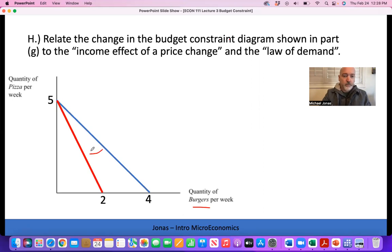This pivot to our new budget constraint means that all the combinations of pizza and burgers in this region between the two budget lines are now unattainable. So when the price of burgers goes up, even if we still wanted to buy whatever we were purchasing before, we can't afford it. We have to move in.